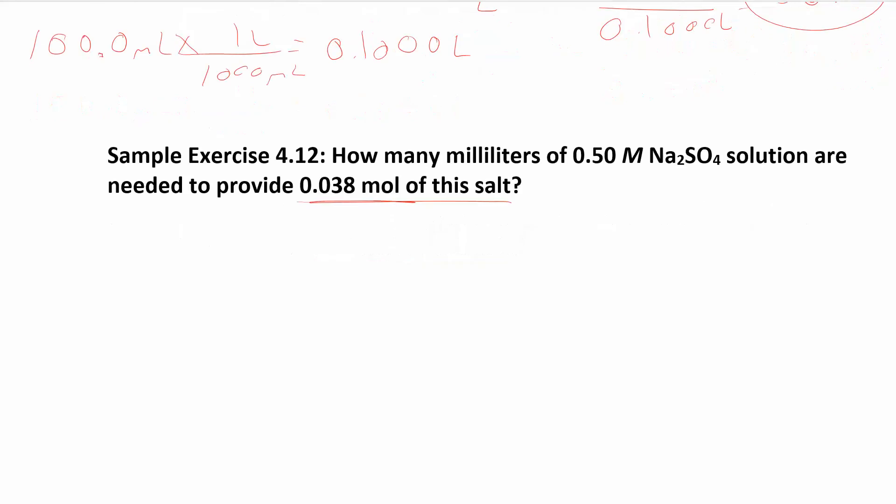How many milliliters of a 0.5 molar Na₂SO₄ solution are needed to provide 0.038 moles of this salt? So I'm trying to find milliliters. I know that molarity equals moles over liters. So if I can find liters, I can find milliliters. If I just rearrange this equation really quickly, multiply both sides by liters and then divide by molar, I get liters are just moles over molar. And I have molar and I have moles, so I can do that. I can take 0.038 moles, divide that by the 0.5 molar, which is just moles over liters. And then the moles cancel, so I get moles over moles over liters, which just gives me liters, right?